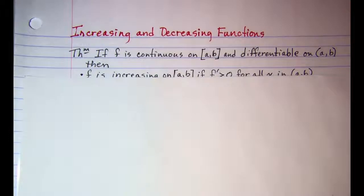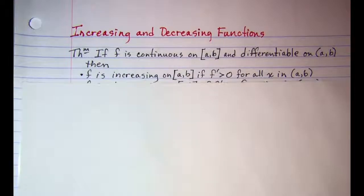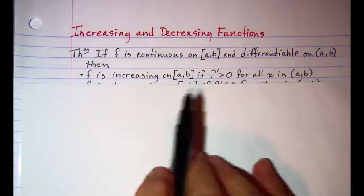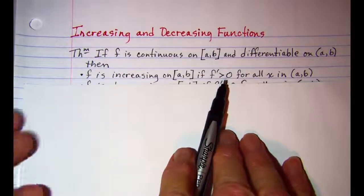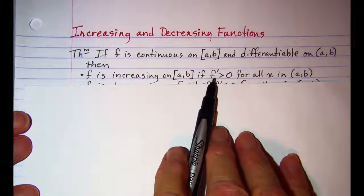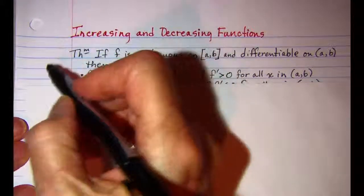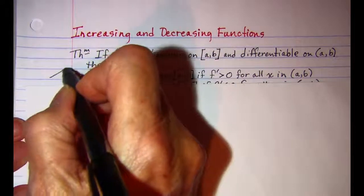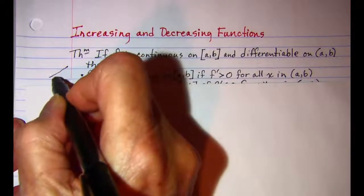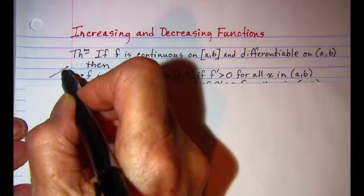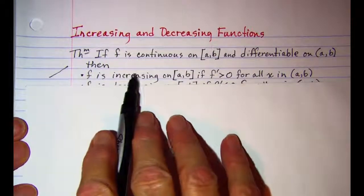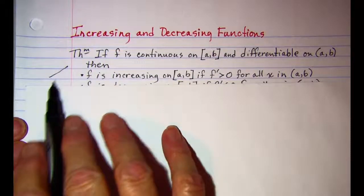Our theorem that we'll be using: if f is continuous and differentiable, then f is increasing if the derivative is positive. Remember, the derivative is the slope of the tangent line, so basically we're saying that if our tangent line has a slope that's positive, then our function is increasing, going up.